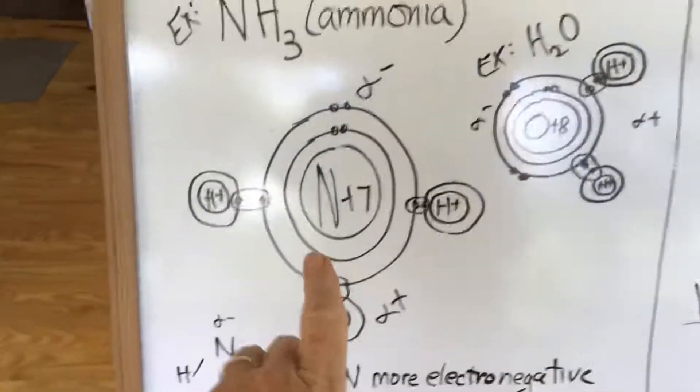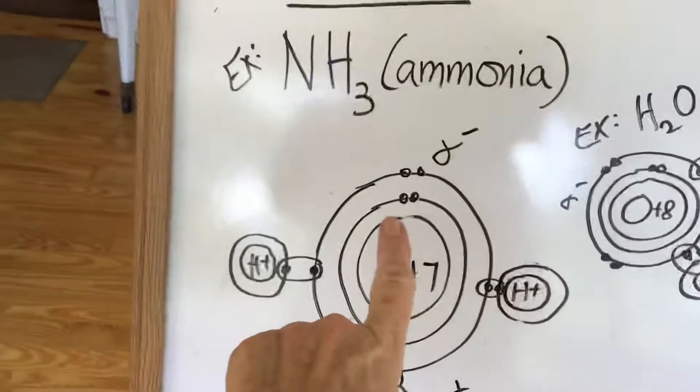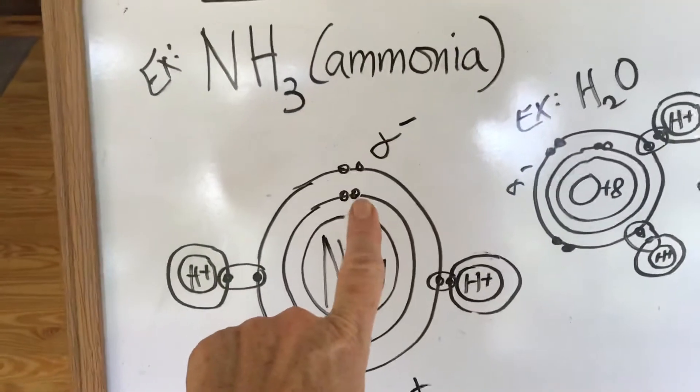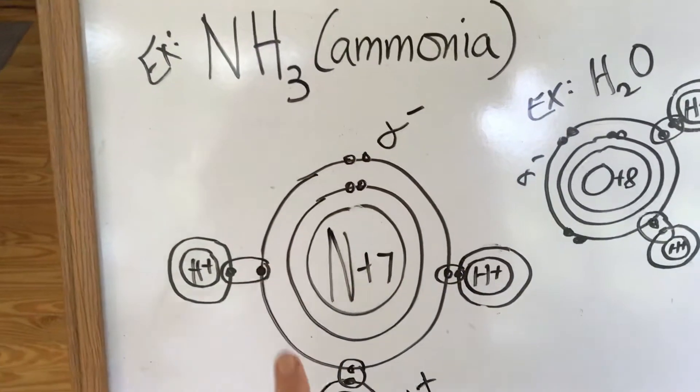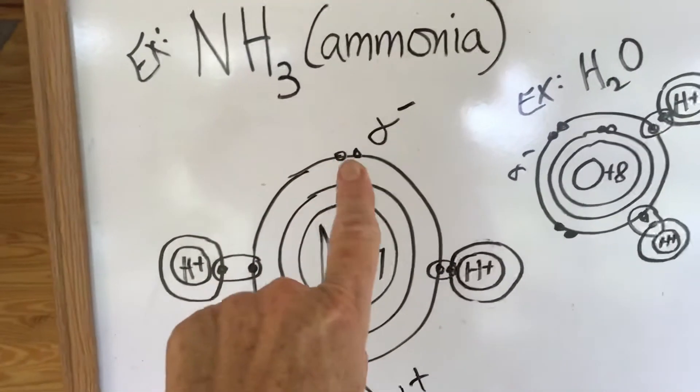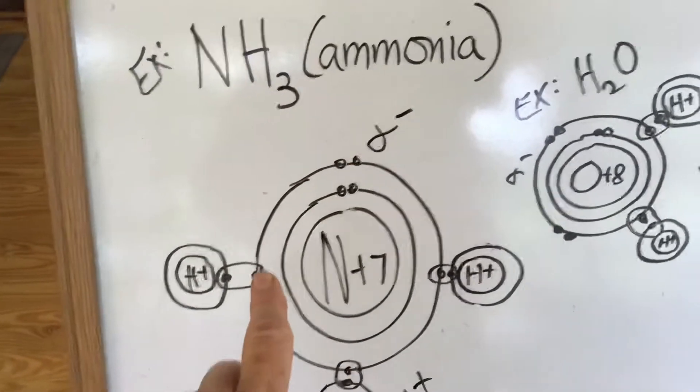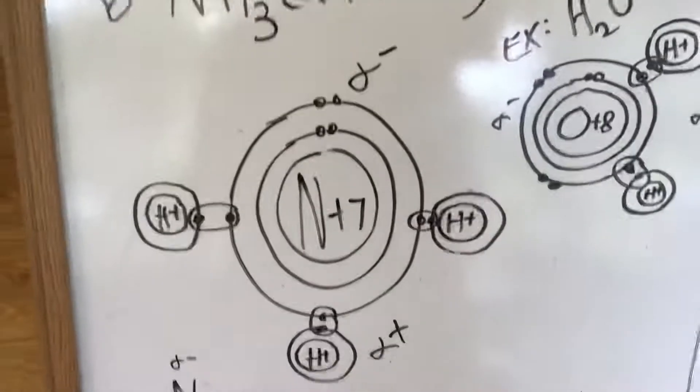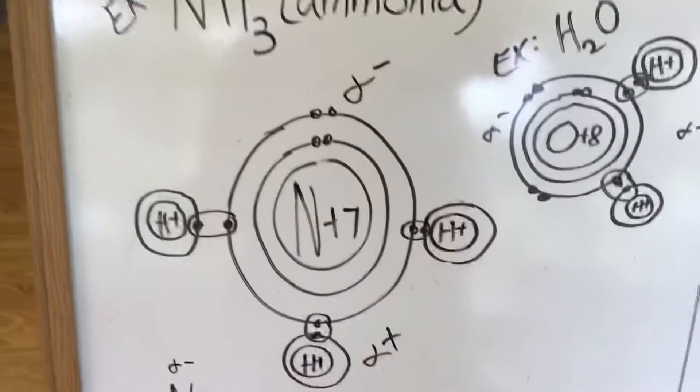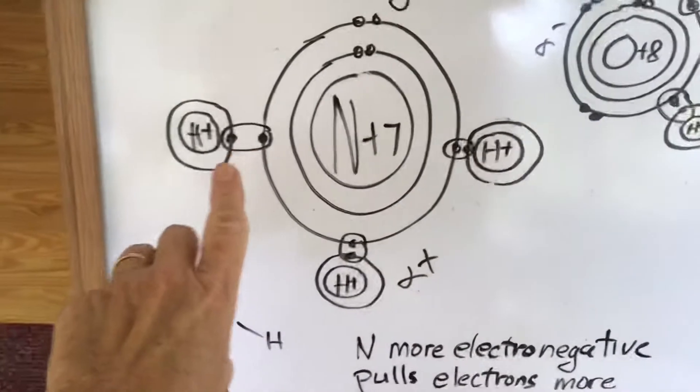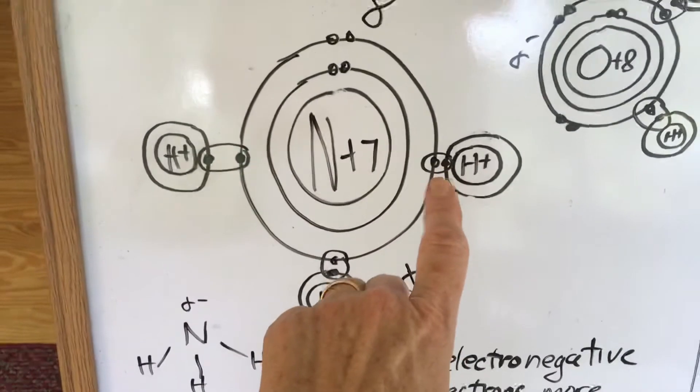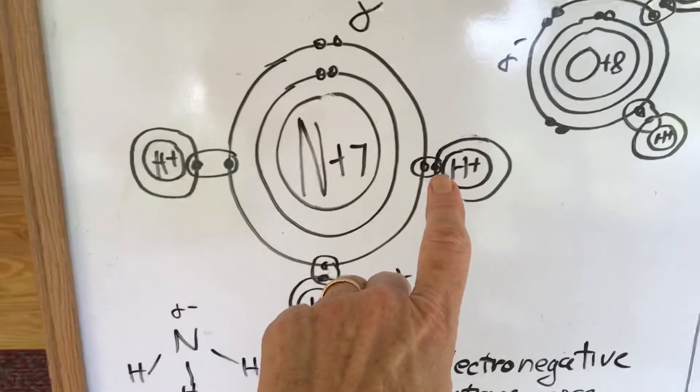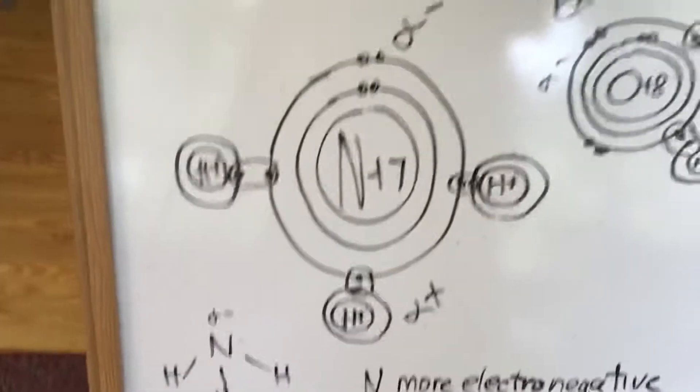Nitrogen, remember, is plus seven. So looking at this closer, we have two electrons in the first energy level, and then we're going to end up having five electrons in the valence shell. So we have two that are paired and then three single ones. So that gives nitrogen the ability to bond to three hydrogens. And in this case, it's going to be covalently shared with the single electrons that are in the hydrogen outer shell.